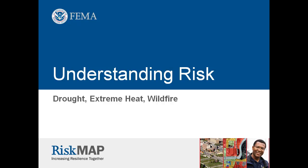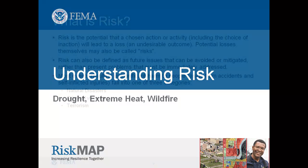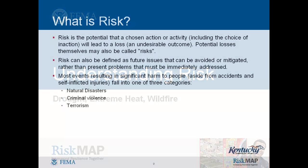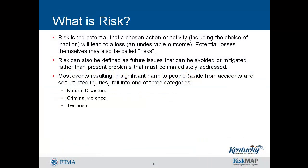The purpose of this module is to explain what risk is and how natural hazard risks specific to the state of Kentucky can potentially affect its residents. Risk is the potential that a chosen action or activity, including the choice of inaction, will lead to a loss or an undesirable outcome. The notion implies that a choice having an influence on the outcome exists. Risk can also be defined as future issues that can be avoided or mitigated, rather than present problems that must be immediately addressed.